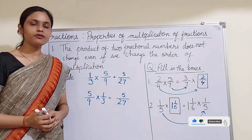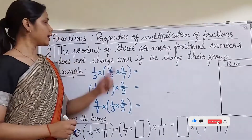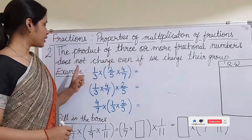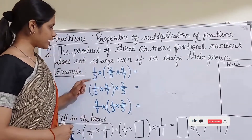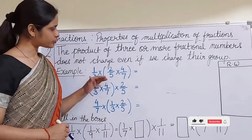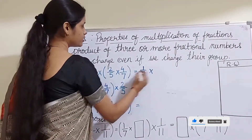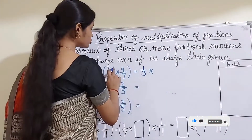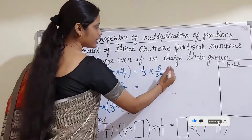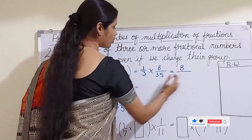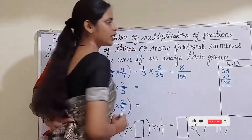Now let us understand the second property of multiplication of fractions. The second property says the product of three or more fractional numbers does not change even if we change their grouping. For example, take 1/3 multiplied by (2/5 × 4/7). First solve the bracket: 2 × 4 = 8 in the numerator, 5 × 7 = 35 in the denominator. Then 1/3 × 8/35 gives 8 in the numerator and 35 × 3 = 105 in the denominator, giving 8/105.